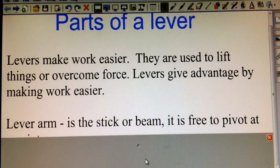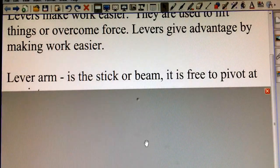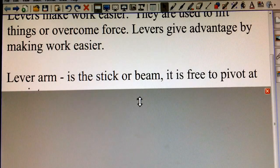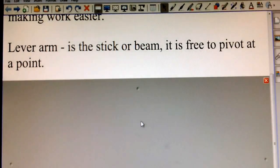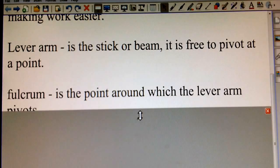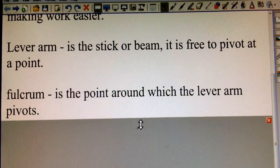The parts of a lever are the lever arm. That is the beam or the stick that pivots around a point. The point that it happens to pivot around is called the fulcrum. So that's the point where the lever arm will pivot.